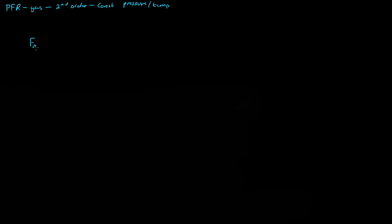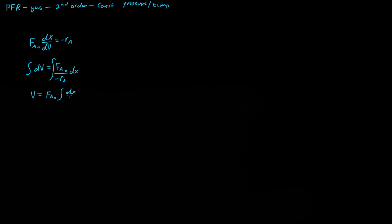The design equation is dFA₀/dV · dX = -rA. If we rearrange and solve for dV, we get dV = FA₀ / (-rA) · dX. Integrating both sides, the volume equals FA₀ times the integral of dX / (-rA), since FA₀ is a constant.